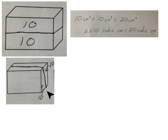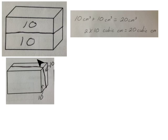Here's another way we could divide that rectangular prism: divide it horizontally into two separate layers with 10 in the front and 10 in the back. It would be the exact same number sentence — 2 times 10 cubic centimeters equals 20 cubic centimeters.